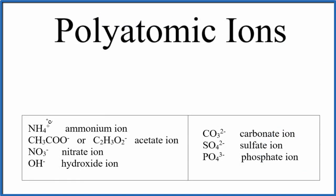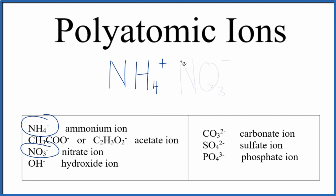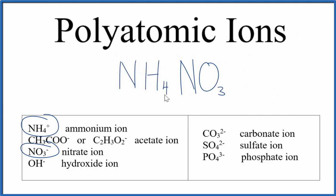So we have the ammonium ion, NH4+, and that can bond with another negative polyatomic ion — how about the nitrate ion, NO3-? Since we're dealing with ions, this is going to be an ionic compound, and the charges need to balance. We have 1 plus and 1 minus — that balances out. We end up with NH4NO3, ammonium nitrate, a very common compound with two different polyatomic ions.